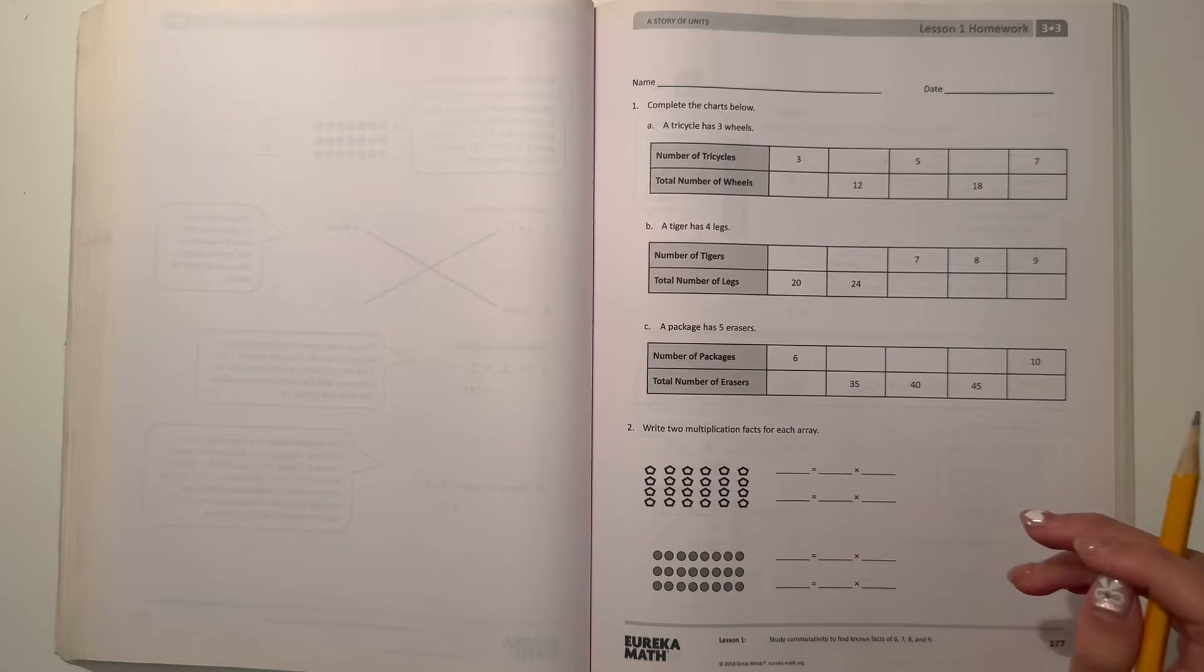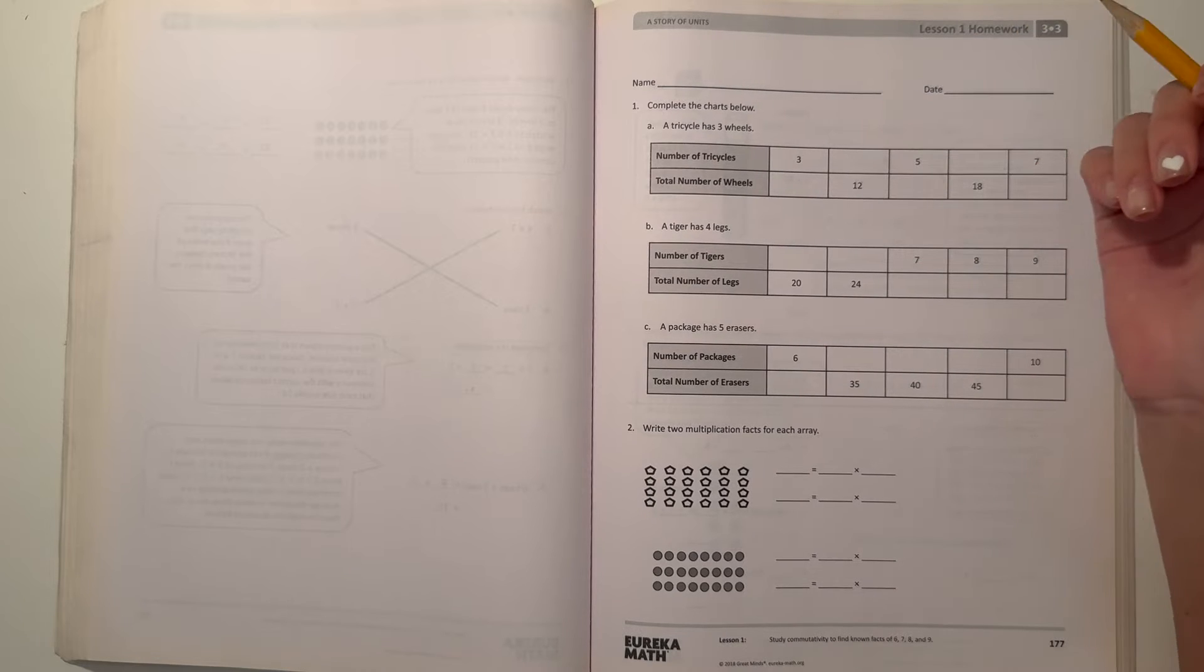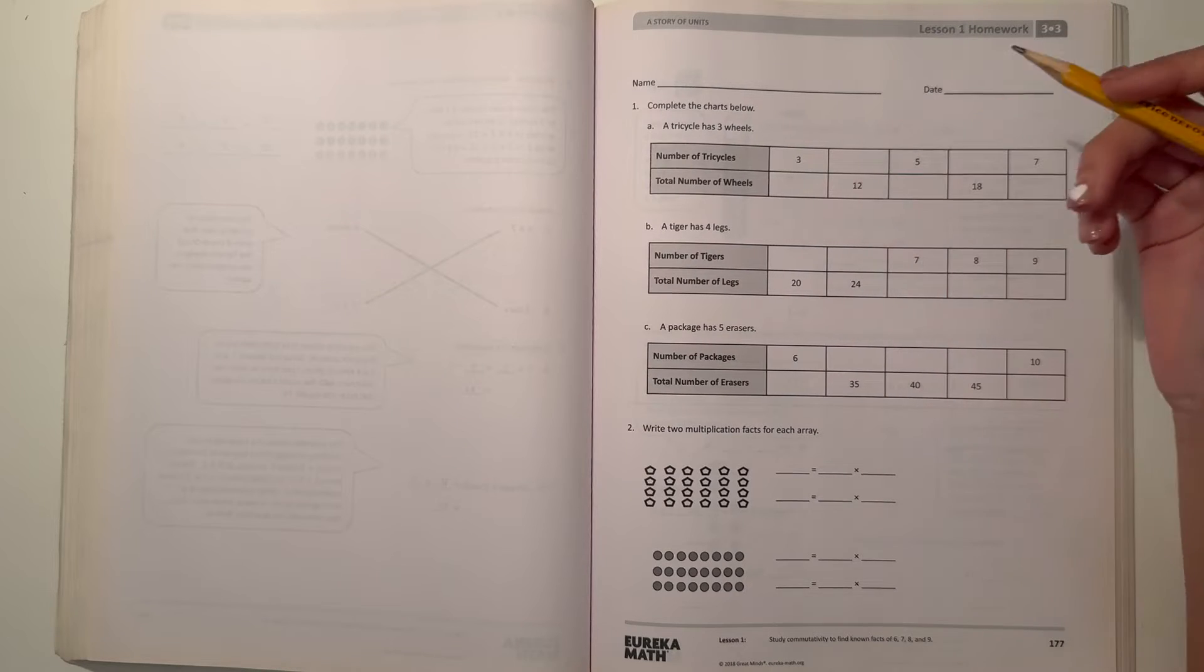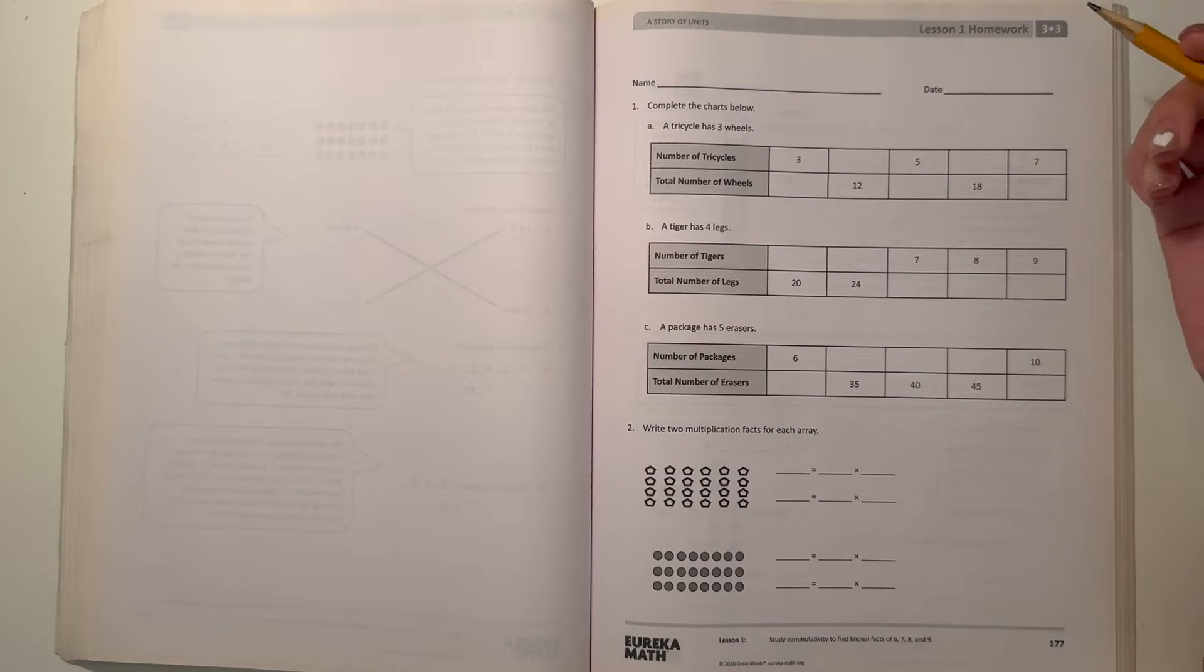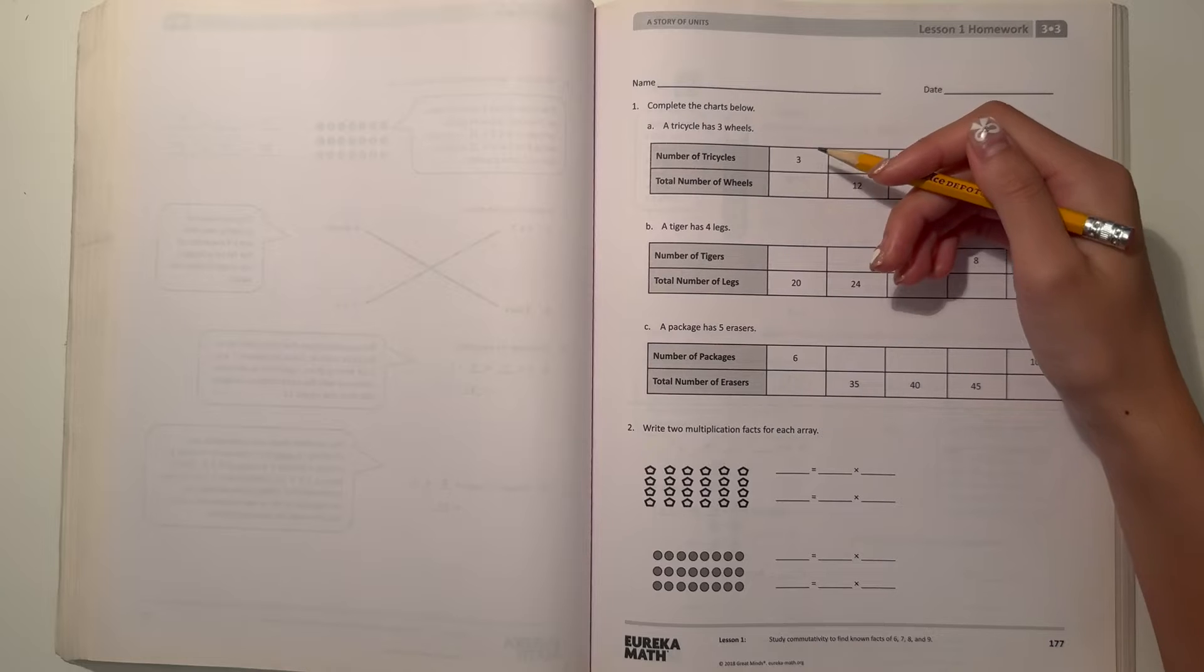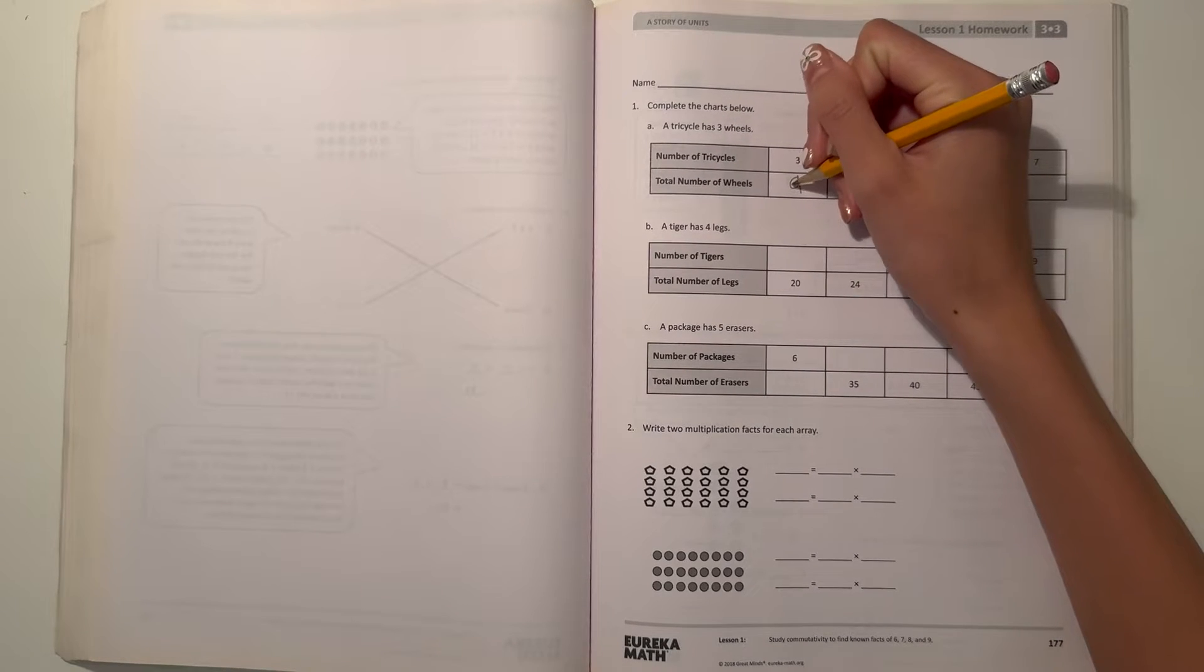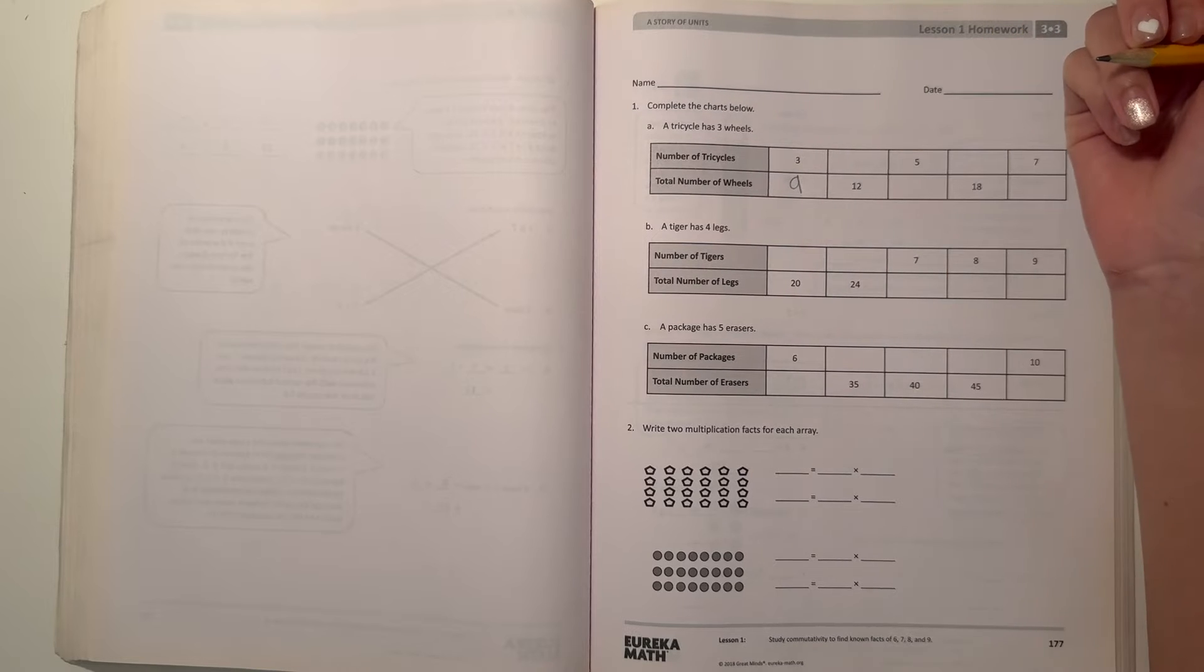Number 1, complete the charts below. So A, a tricycle has three wheels. So now let's complete our chart. So if we have three tricycles and each tricycle has three wheels, then how many wheels are there? Well, three times three is nine. So that would be the answer to this first box.